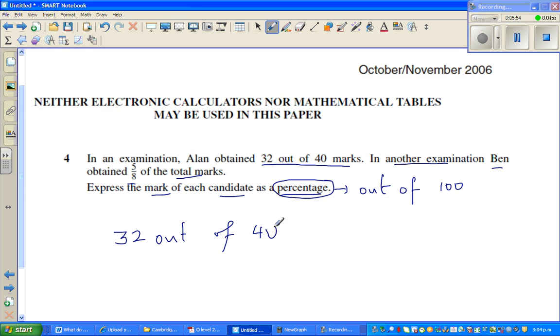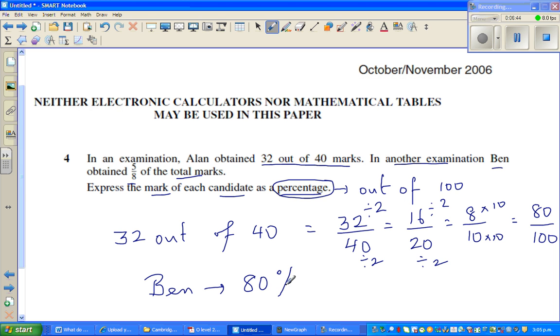Out of 100. So 32 out of 40 you can write as 32 divided by 40. If you want to change this, this is 16 out of 20, and this is 8 out of 10. And 8 out of 10, again you multiply this. I'm halving this, so divide by 2. And again divide by 2. I'm going to now multiply this with 10 and this is also 10. That is 80 out of 100. So Alan has got 80 out of 100, which is 80 percent.